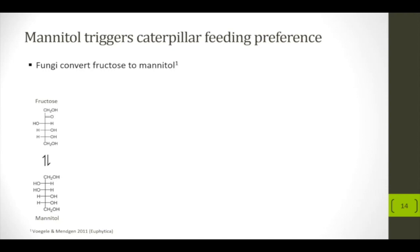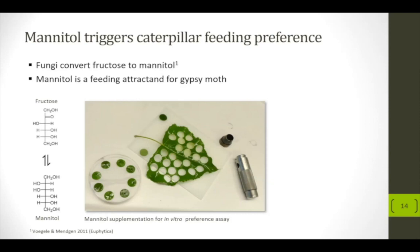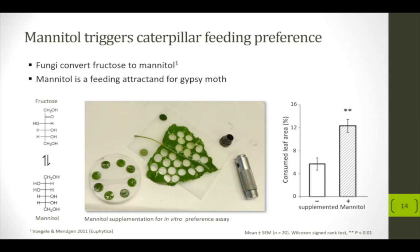What do the caterpillars say about mannitol? To find out, we coated a mannitol solution thickened with agar onto a leaf surface, cut out leaf discs, and placed them in a petri dish so caterpillars could choose between mannitol-supplemented and non-supplemented leaf discs. The result showed that mannitol-supplemented leaf discs were eaten twice as much as non-supplemented discs, showing that mannitol acts as a feeding attractant or feeding stimulant for these caterpillars.